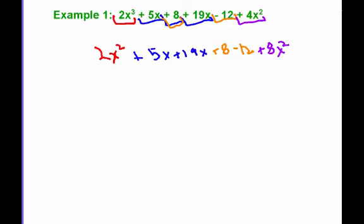So now I want to go through and I want to add these up. 2x cubed doesn't have a like term, so it's going to go by itself. Also, 4x squared doesn't have a like term, so it goes by itself.